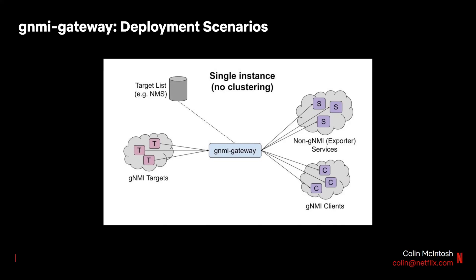On the right-hand side, GNMI Gateway serves a GNMI subscribe interface that other GNMI clients can connect to. GNMI clients, for example, may be tools with native GNMI support or a network operator running GNMI from a CLI on their laptop. Also on the right-hand side, we have GNMI Gateway forwarding data to non-GNMI services via exporters.